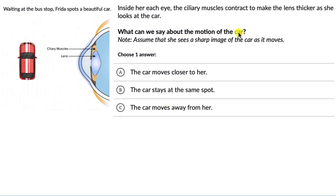What can we say about the motion of the car? We can assume that she sees a sharp image of the car as it moves.